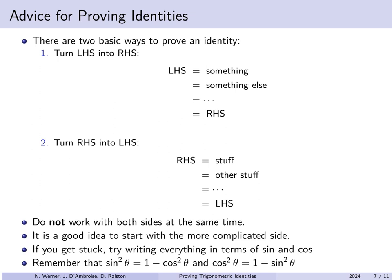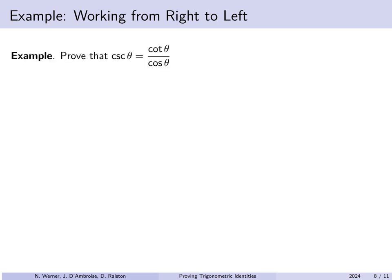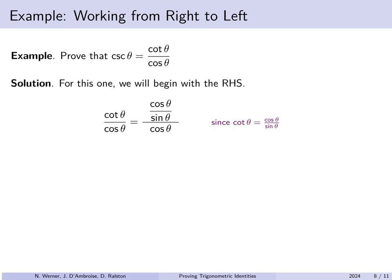Let's prove that cosecant theta equals cotangent theta over cosine theta. The right-hand side looks more complicated — it has two trig functions and a fraction — so we start there. Replacing cotangent theta with cosine theta over sine theta, we have (cosine theta over sine theta) divided by cosine theta. This equals cosine theta over sine theta times 1 over cosine theta. The cosine theta terms cancel, leaving 1 over sine theta, which is cosecant theta — exactly the left-hand side.